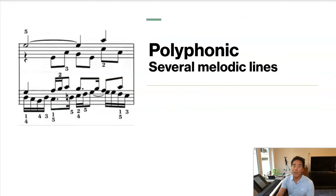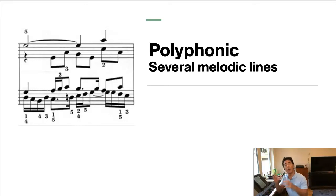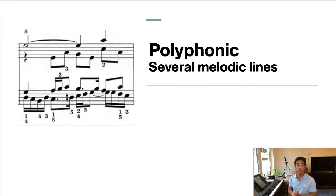A more complicated texture — probably the most complicated texture — is polyphonic texture. Polyphonic texture is several melodies at the same time. You could think of this as two people in a debate, but they're all talking simultaneously. Or maybe it's a conversation where the voices are overlapping.